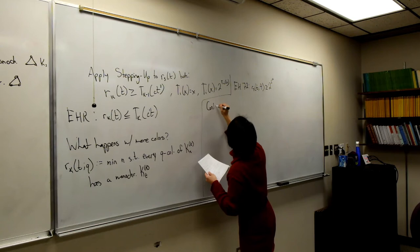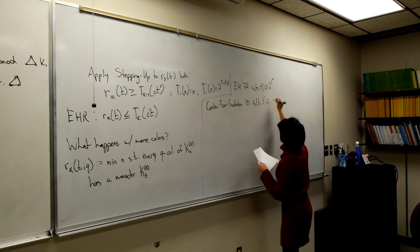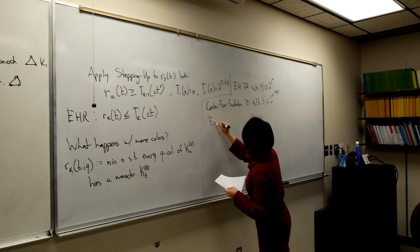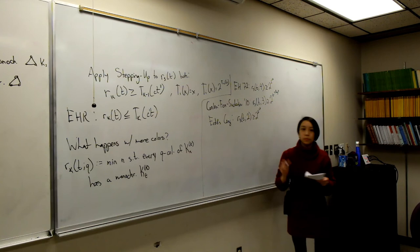Several years later, Conlon, Fox, and Sudakov in 2010 showed that in the intermediary three-color case, we get at least something super-exponential. Erdős actually conjectured that this should be the case for two colors as well — that the truth for two colors is double exponential. One way to read this is that the number of colors doesn't matter asymptotically.